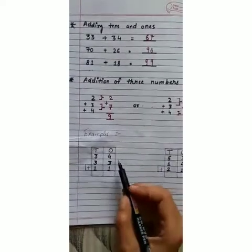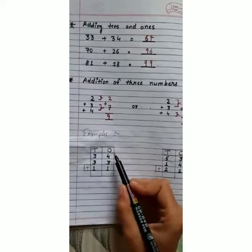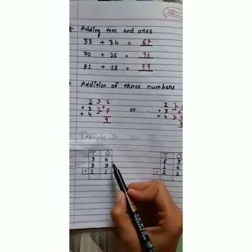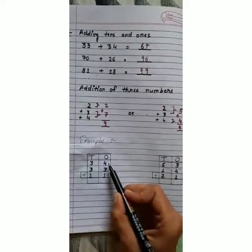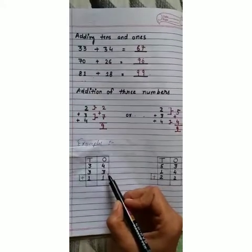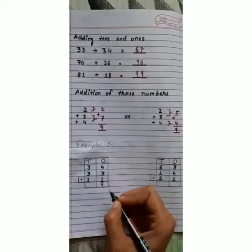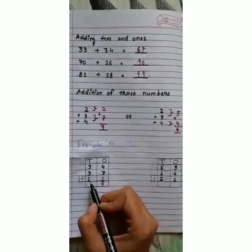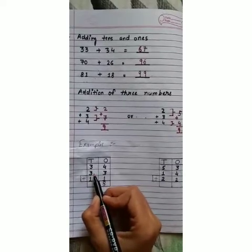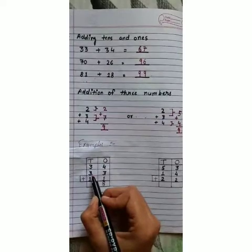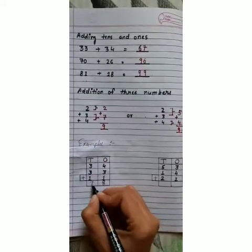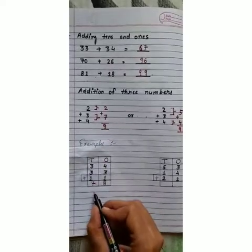Examples. First, we add the one's digits: four plus three plus one. Four plus three is seven, and seven plus one is eight — write eight. Now we add the tens digits: three plus three is six, and six plus one is seven. So the answer is seventy-eight.